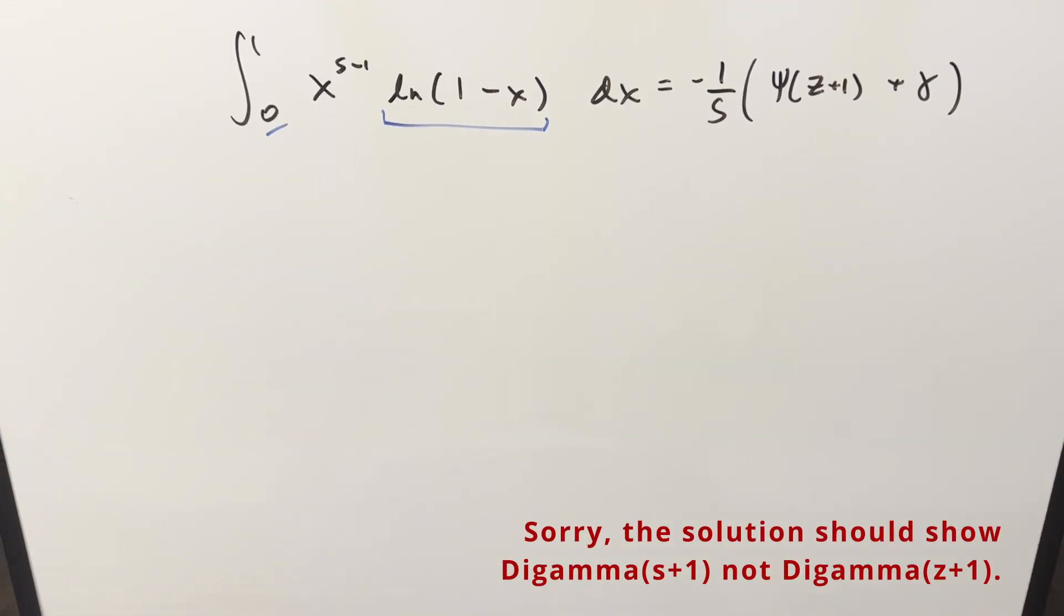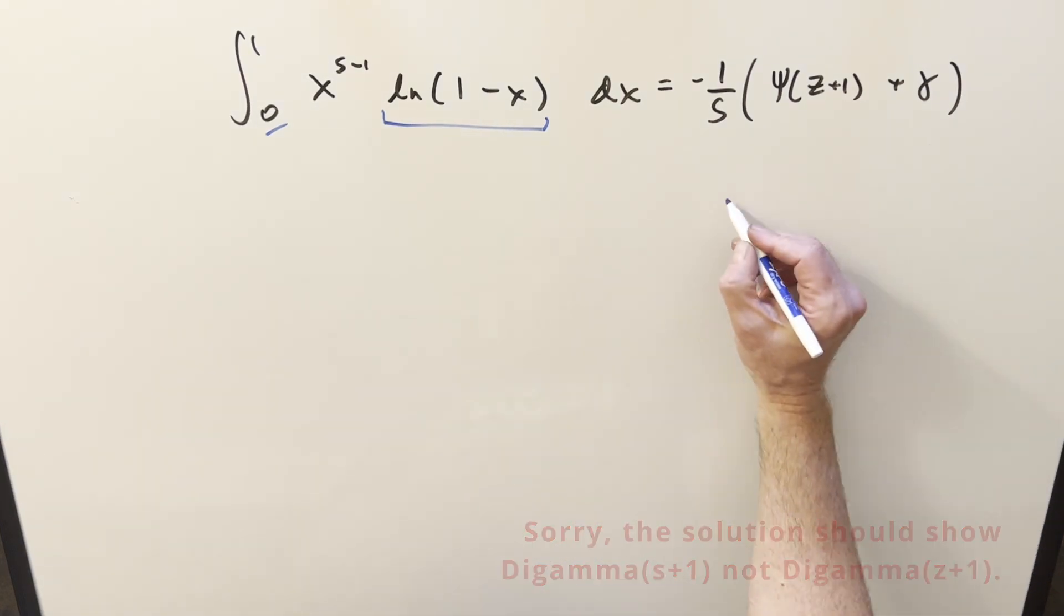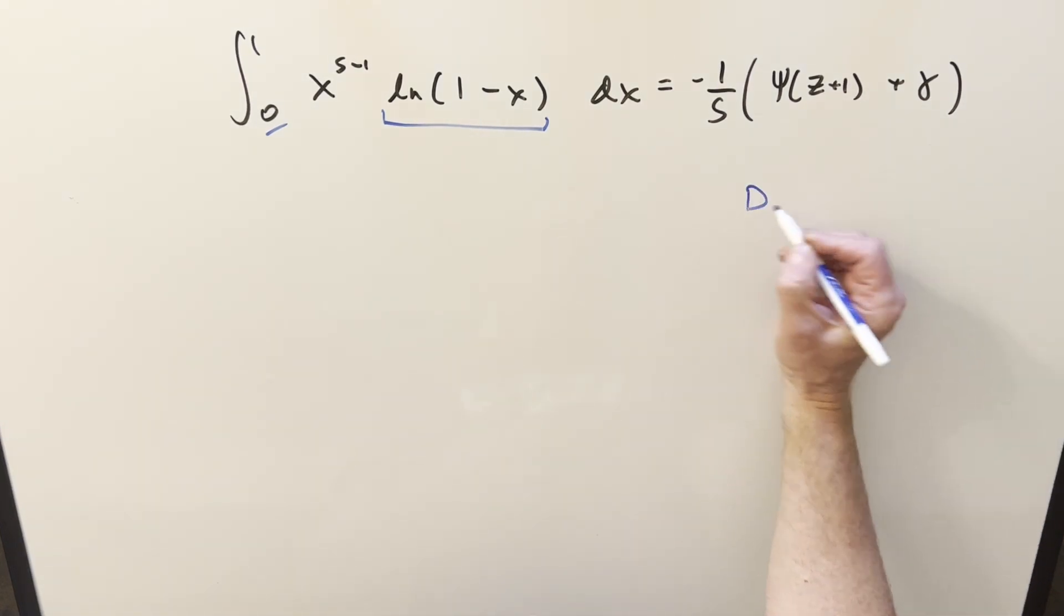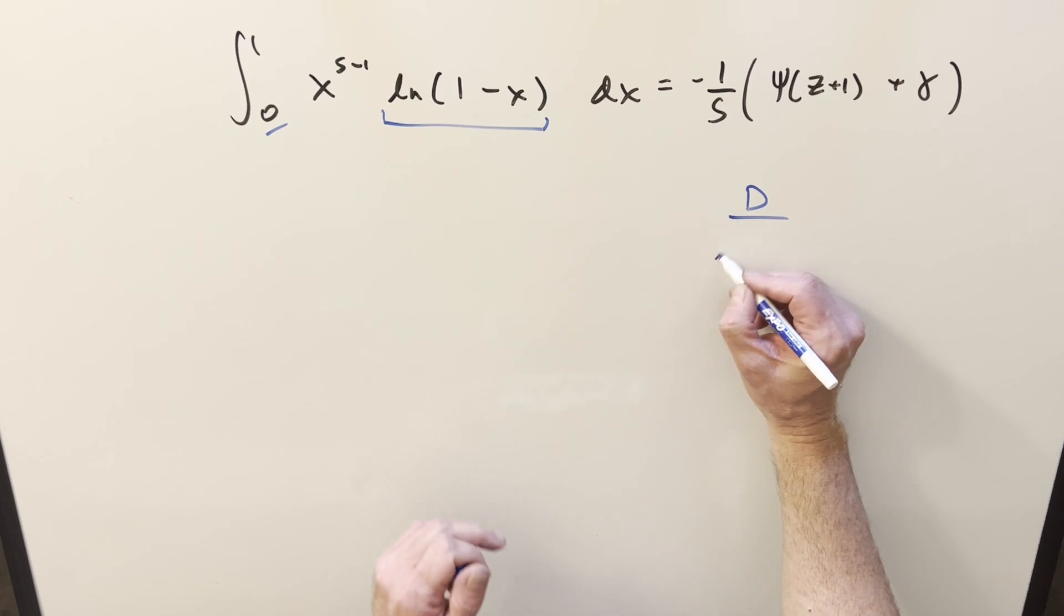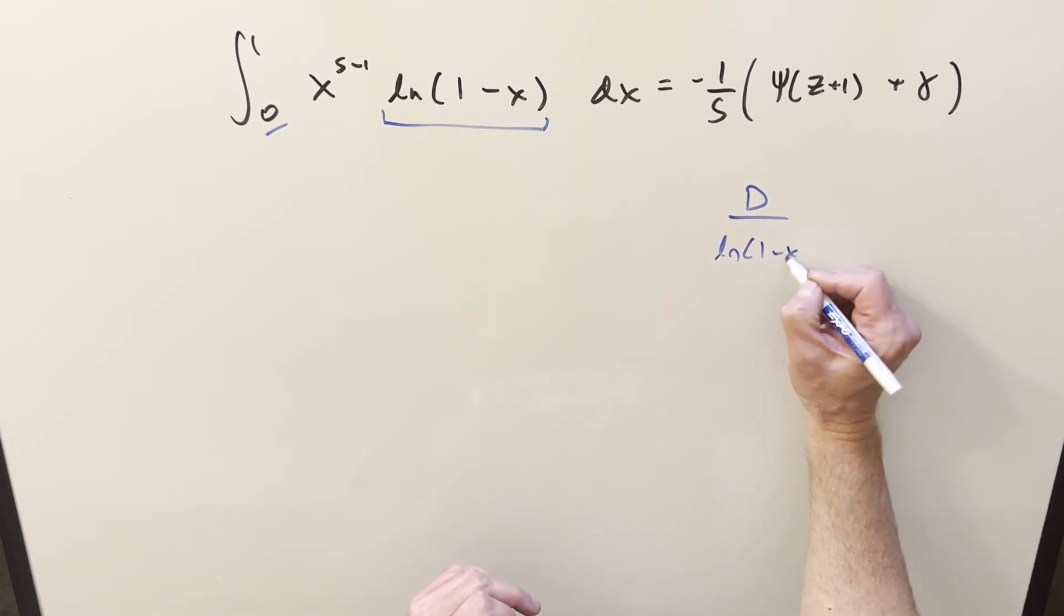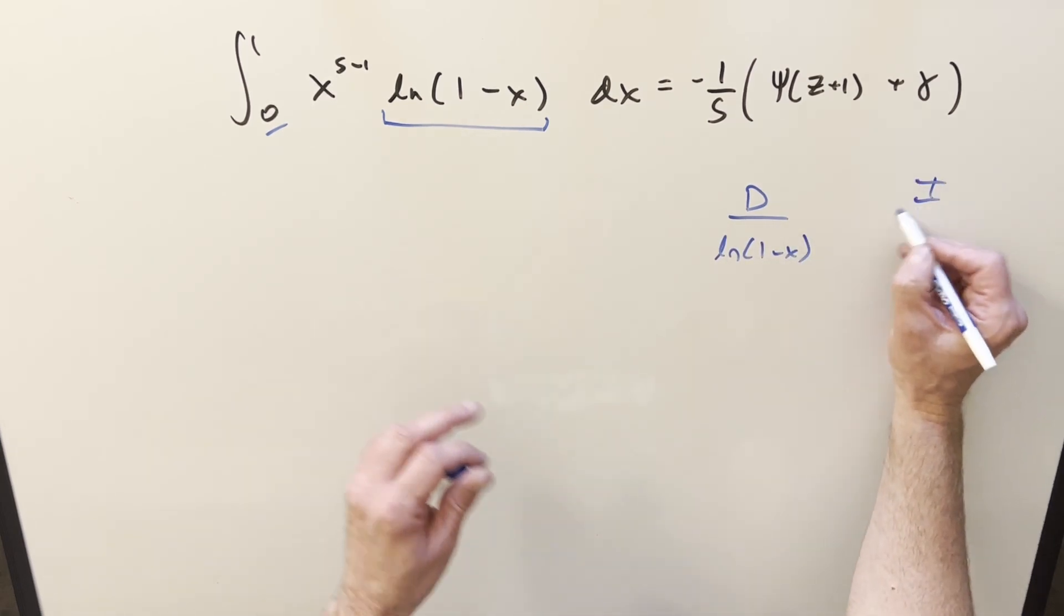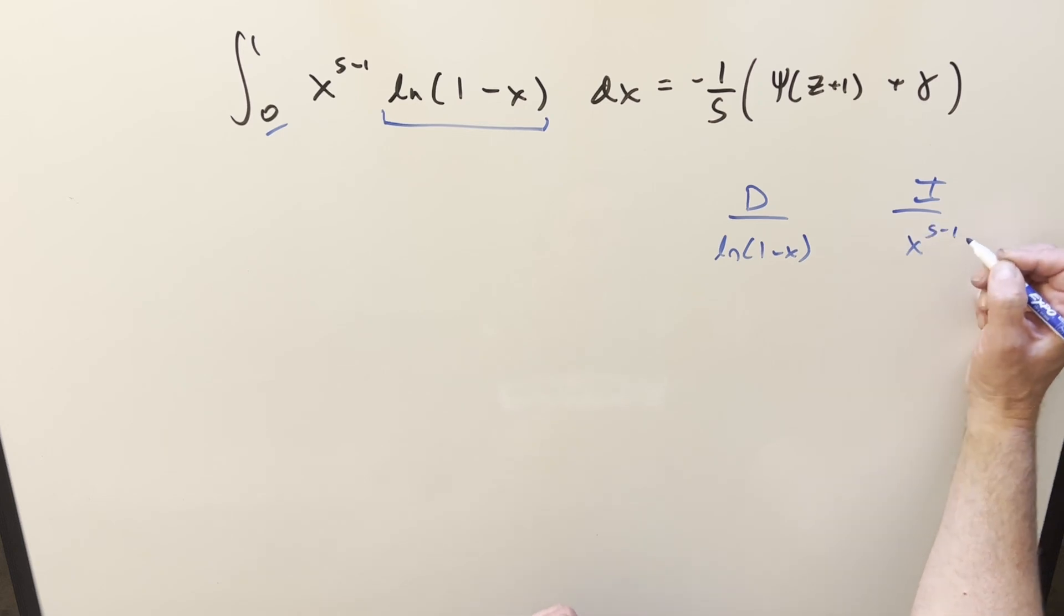Okay, moving on to method 2 now, doing something starting off a little more straightforward. We're just going to do integration by parts on it. I'll do the di method, and I'll just differentiate natural log, because that's the way we usually do it. And so let's integrate x to the s minus 1.